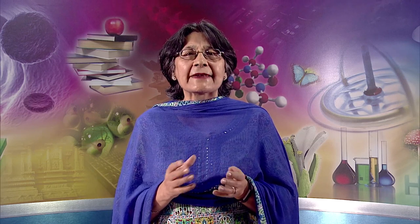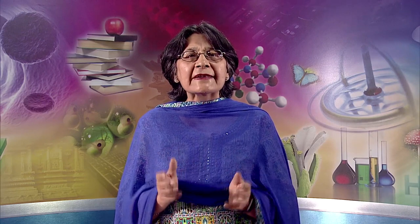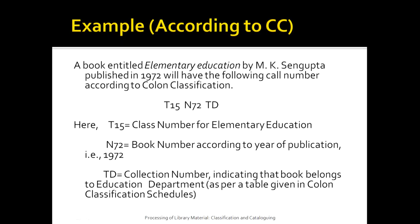Now let us take a look at an example according to Colon Classification. A book entitled Elementary Education by M.K. Sengupta published in the year 1972 will have the following call number: T15,N72,Td. Here T15 is the class number for elementary education, N72 is the book number according to year of publication 1972, and Td is the collection number indicating that the book belongs to the education department, as per a table given in the Colon Classification scheme schedules.